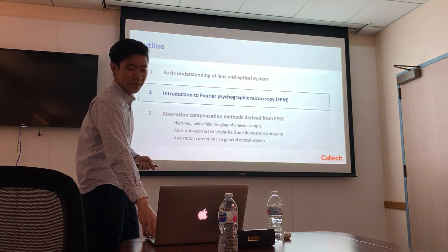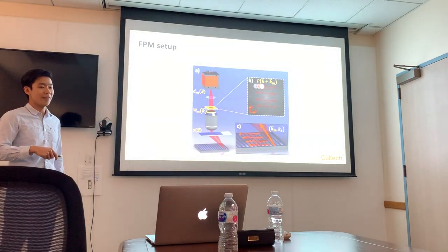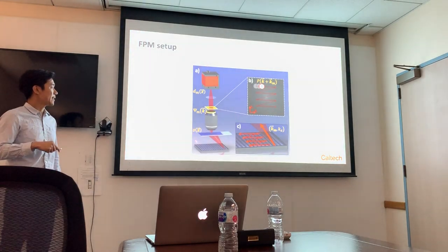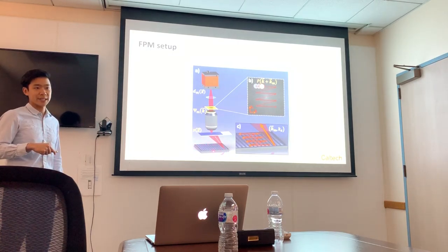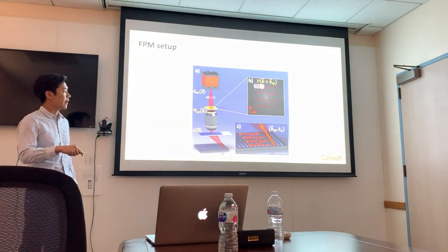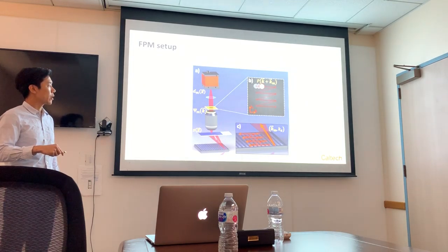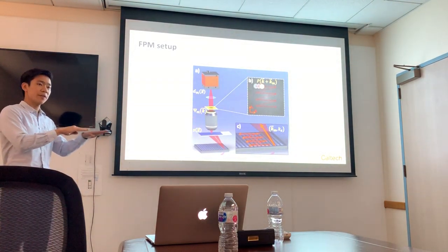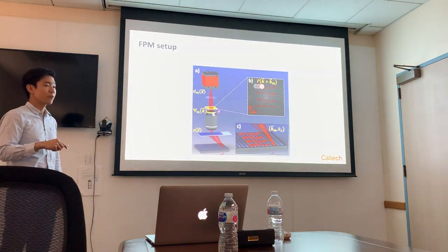This segues into Fourier ptychographic microscopy. This is a typical FPM setup with the typical 4F configuration. The illumination is provided by an LED matrix. Lighting up one LED — assuming it's placed sufficiently far away — provides planar illumination by the time it reaches the sample. Under coherent illumination, because of the Fourier transform relationship between the sample plane and the aperture plane, you are able to shift the Fourier spectrum of the sample, so that every time you capture an image under a different illumination angle, the aperture samples a different region of the Fourier spectrum, and that information gets relayed to the detector.